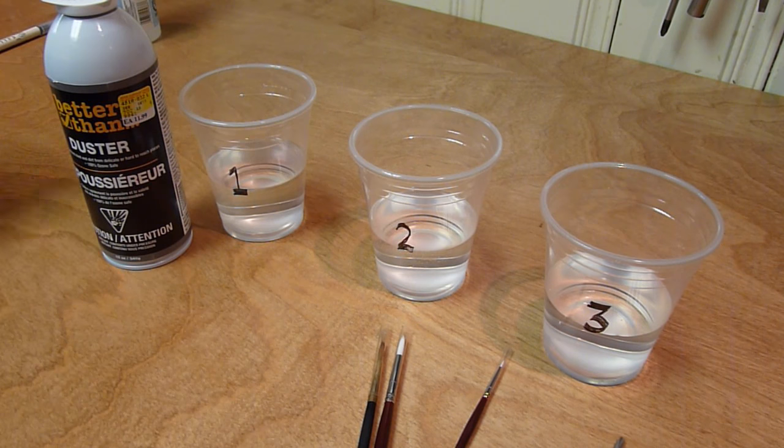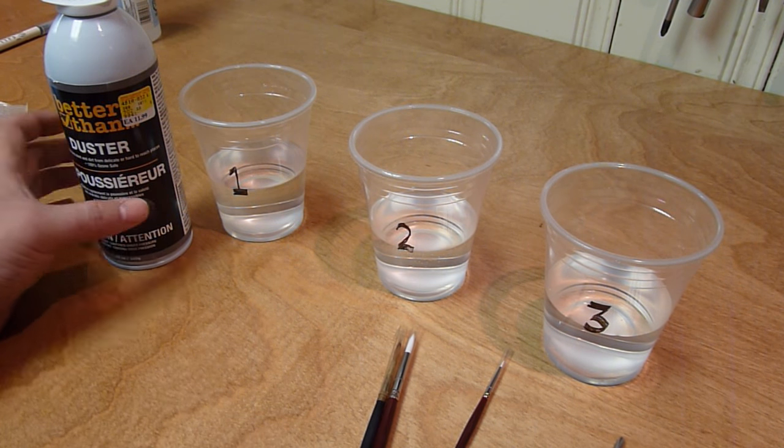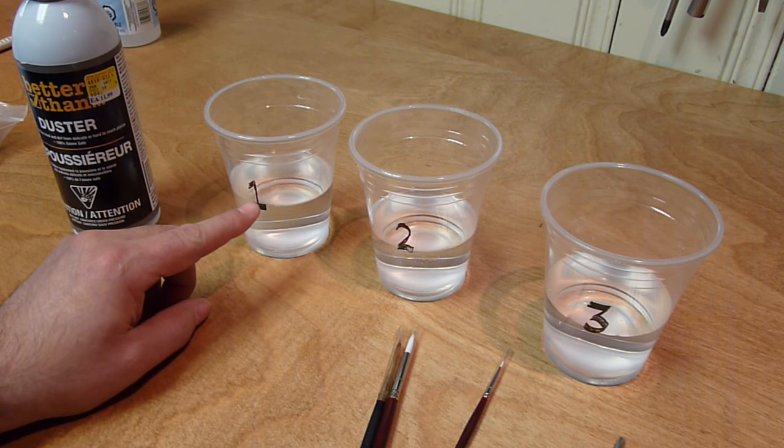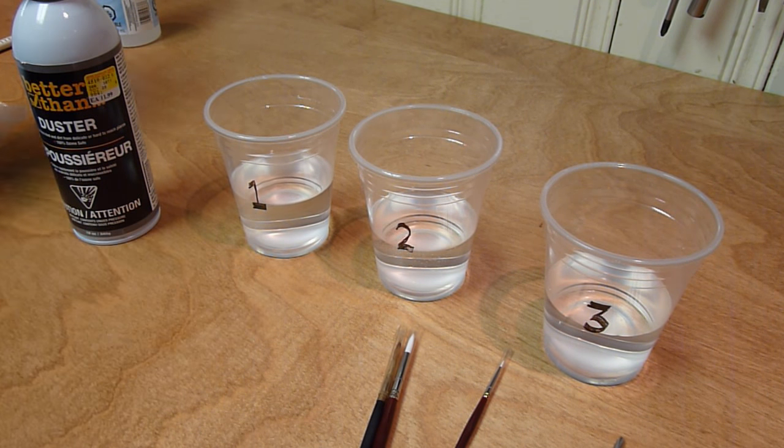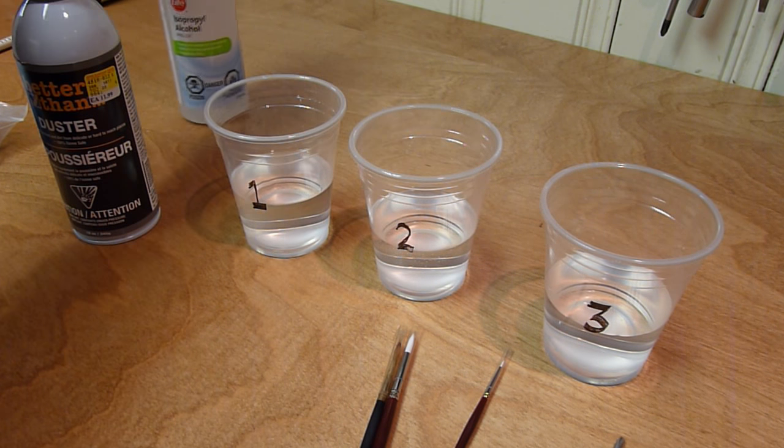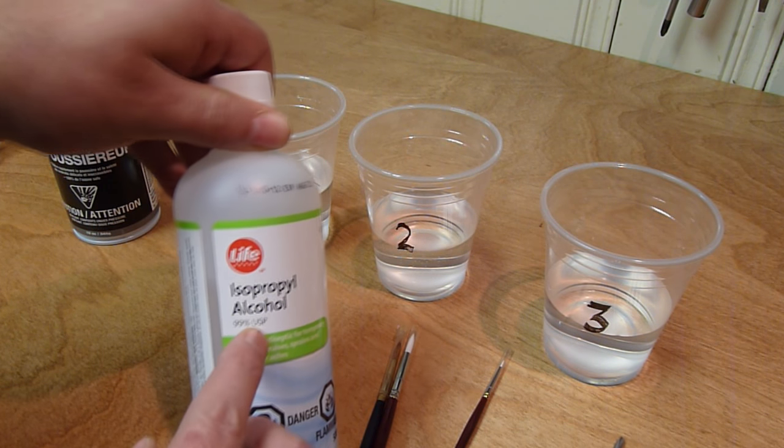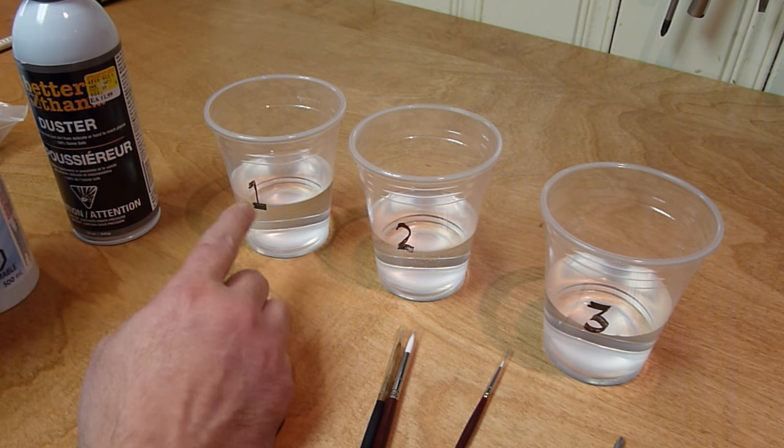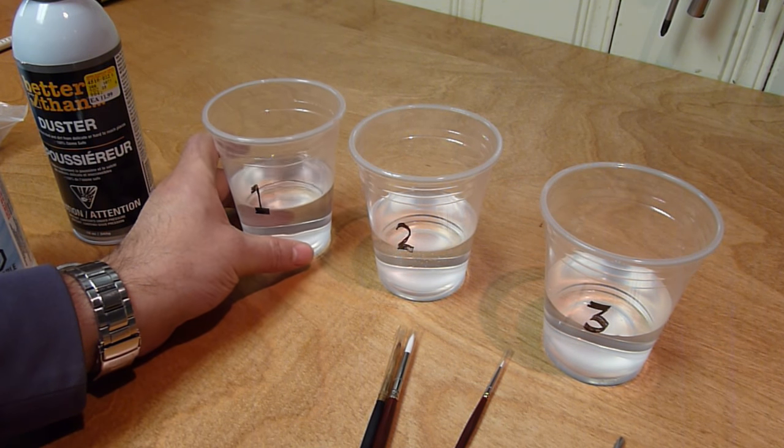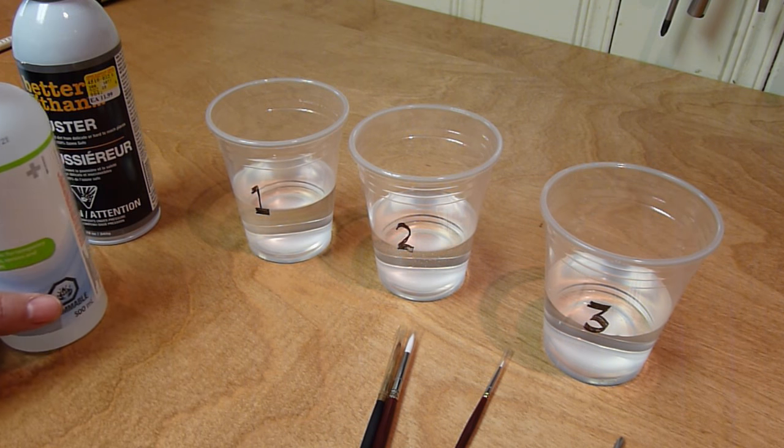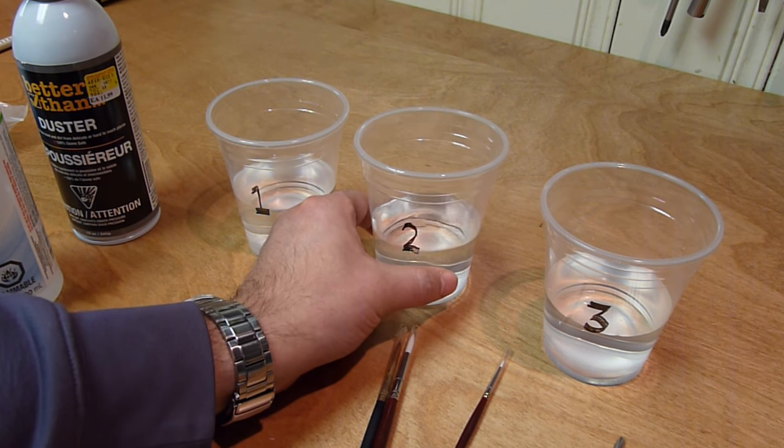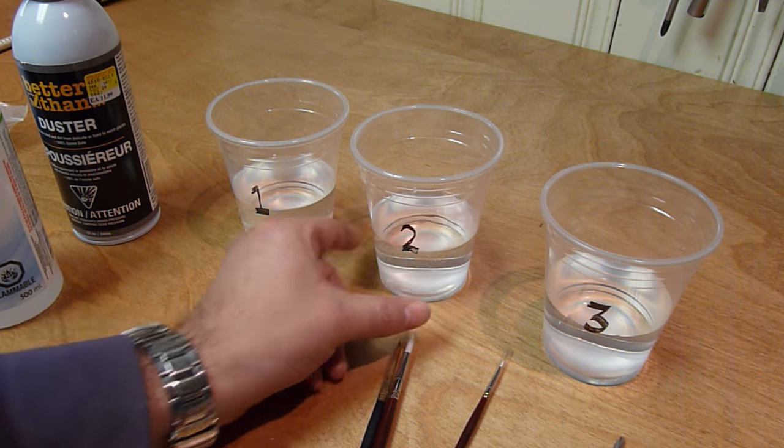Next we have three different solutions. This is distilled water mixed with 99% isopropyl alcohol. There are three different ratios here. The first one I've mixed 25% alcohol to 75% water, on the second one 10% alcohol, and the third one distilled water only.